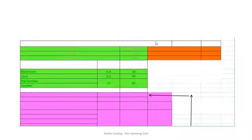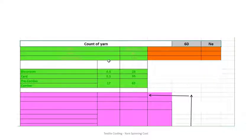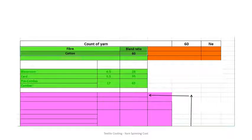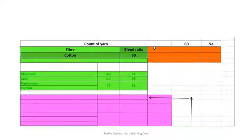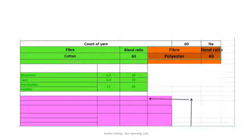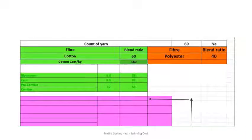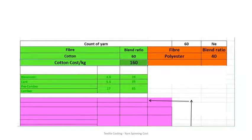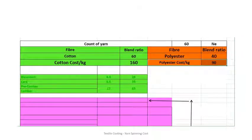Let us look into the given data. The count of yarn is 60 Ne. The blend ratio for cotton fiber is 60% and for polyester it is 40%. The cost of material: cotton cost per kg is 160 rupees, whereas the polyester cost per kg is 90 rupees.